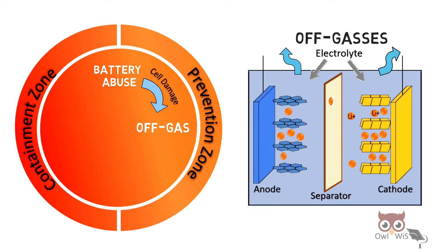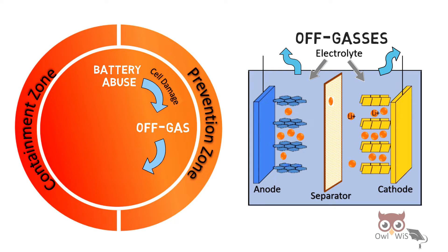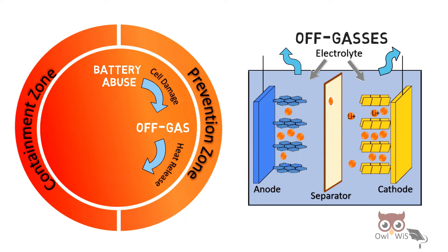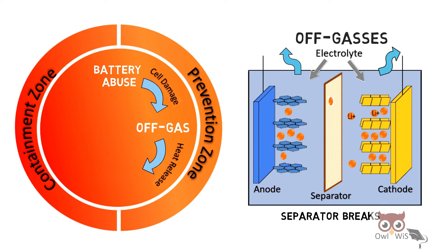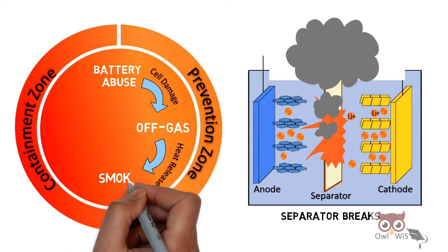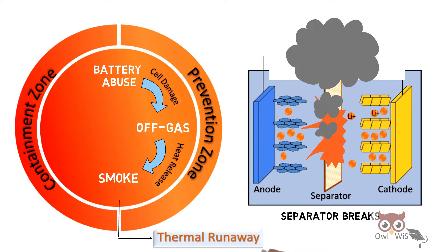These off-gases then cause heat release, resulting in the separator breaking. The separator breaks due to this heat, and then there is a short circuit causing smoke. At this stage, the thermal runaway has already begun, and we cannot prevent it further.